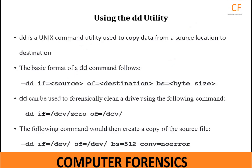DD is a UNIX command utility used to copy data from a source location to a destination. From a Computer Forensics perspective, DD is important because it is an accepted file format for forensic imaging, and because of its versatility — the command can be used to image very specific data. The basic format is: DD IF=source, OF=destination, BS=byte size.